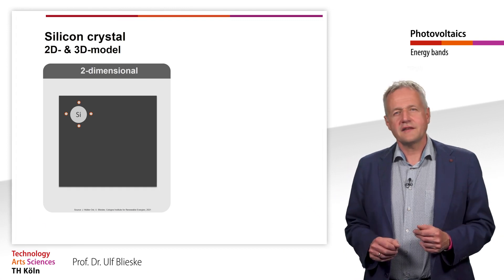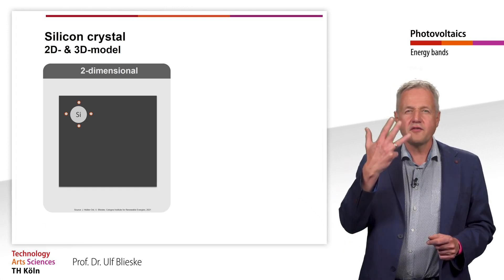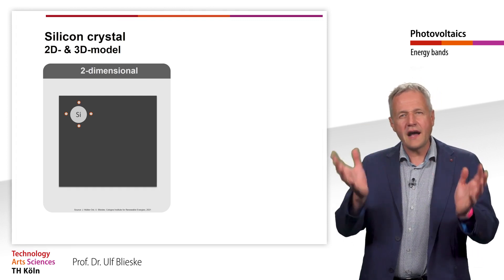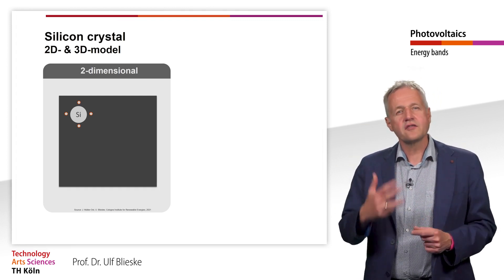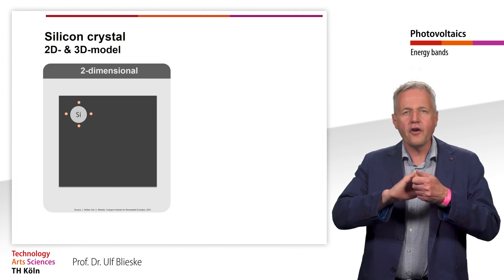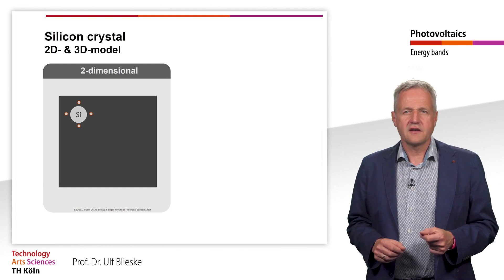Let us take silicon as an example. Silicon has four valence electrons. In order to reach the noble gas configuration, it lacks four electrons. Therefore, it forms a bond, for example, with other silicon atoms.